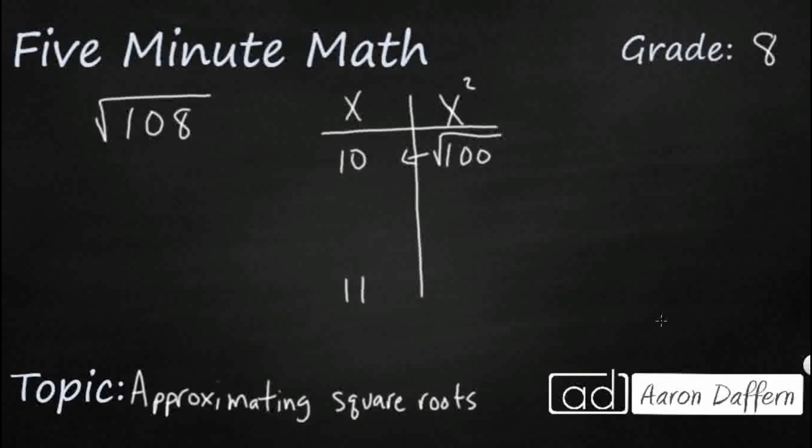And you're going to notice this 11 way overshoots it, right? That's going to go to 121. So, our 108 is going to land pretty close to that 10, because it's only 8 away from the 100, but it's 13 away from that 121. So, it's going to be less than 10.5, maybe call this a 10.3.